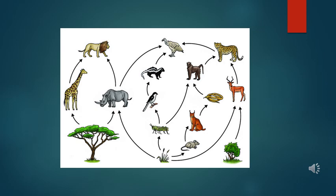Thus, we see that there are a lot of food chains that prevail in an ecosystem, which are interconnecting, overlapping and interdependent in nature.